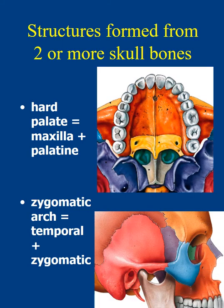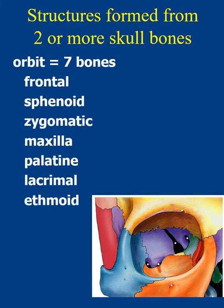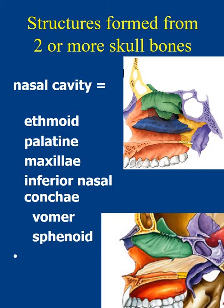To review structures formed by multiple bones: the hard palate is composed of the maxilla — anterior two-thirds — and the palatine bones — posterior one-third. The zygomatic arch is the union of the temporal and zygomatic bones at their respective processes. The orbit is made of seven bones: the frontal, sphenoid, zygomatic, maxilla, palatine, lacrimal, and ethmoid bones. The nasal cavity is formed by the union of the ethmoid, palatine, maxilla, inferior nasal conchae, vomer, and sphenoid bones.